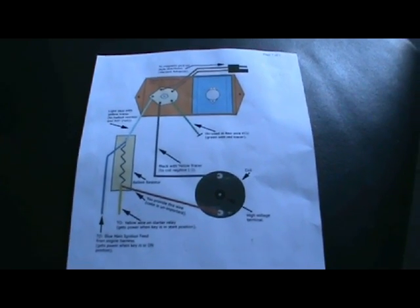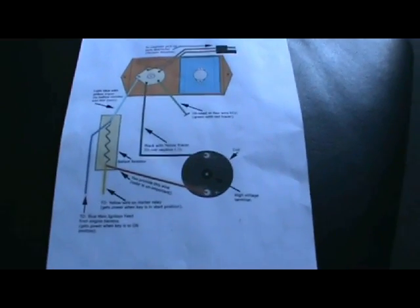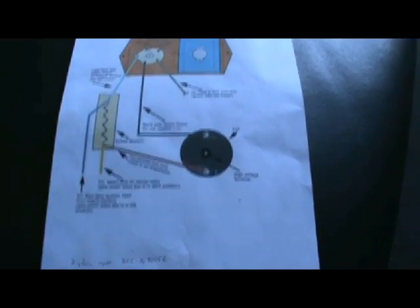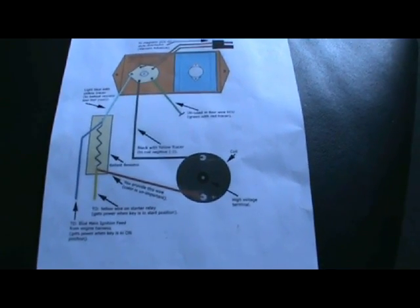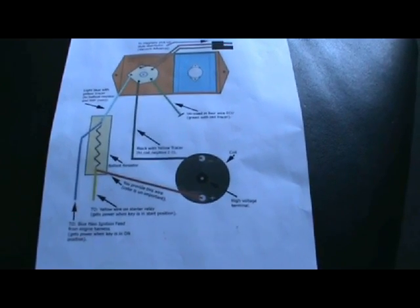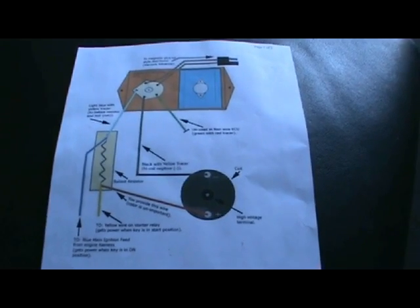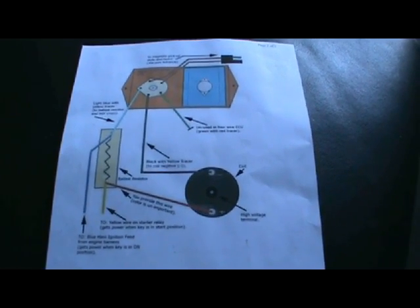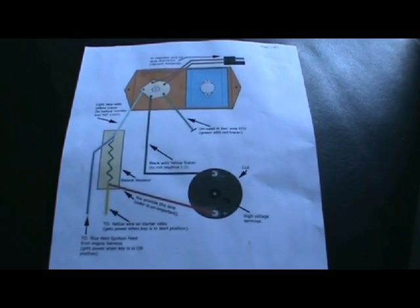You can buy the harness from Chrysler and you get them online. I believe the harness part number is DCC-3690152. There are a few companies out there that make a whole kit. It comes with a harness, ECU, and electronic distributor.